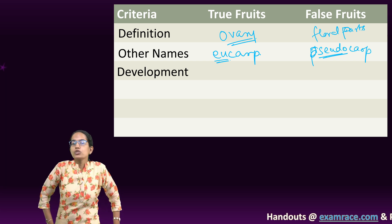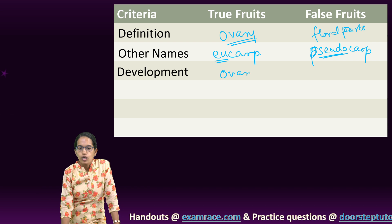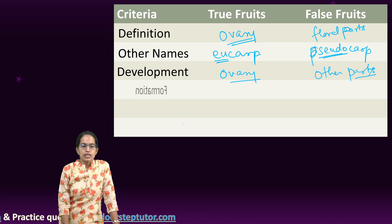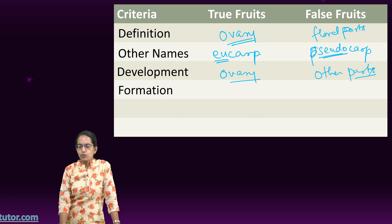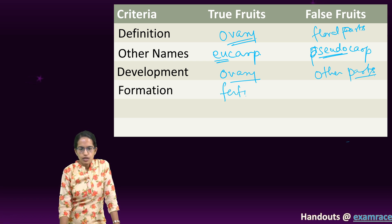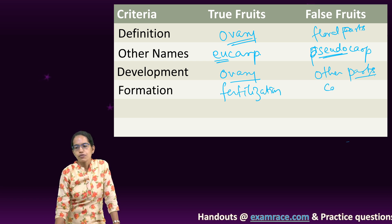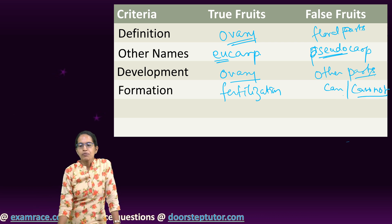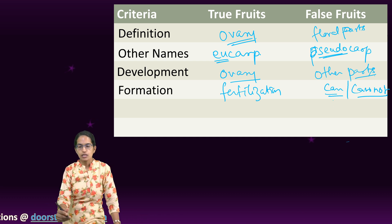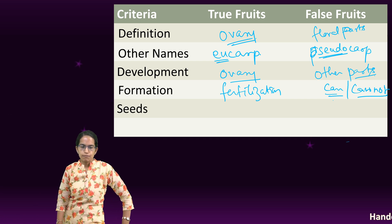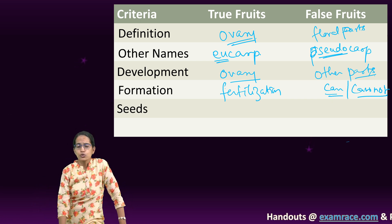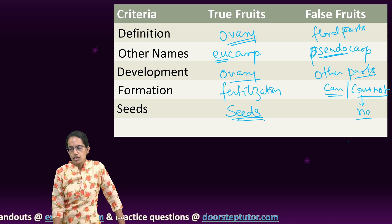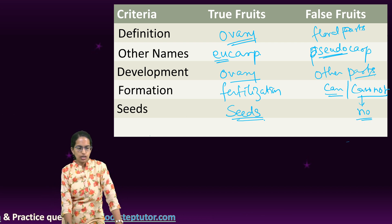In terms of development, true fruits develop from a mature ovary, while false fruits develop from parts other than the ovary as well. Regarding formation, true fruits form only after fertilization. For false fruits, there can be fertilization or no fertilization — if there is no fertilization, that is parthenocarpic. True fruits always have seeds, whereas false fruits — specifically if they are parthenocarpic — won't have any seeds.